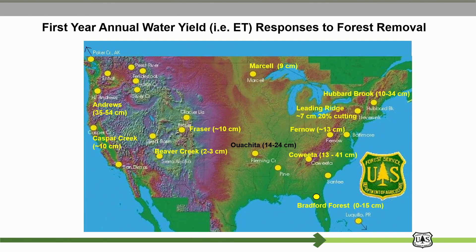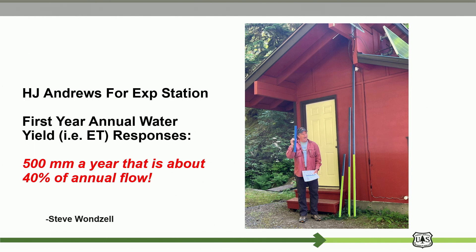We can provide very detailed data on evapotranspiration. For example, at H.J. Andrews — if you clear-cut the forest, how much water can you gain? Basically, you can reduce evapotranspiration by 500 millimeters. That can be even higher than your streamflow in a dry year. The forest uses a lot of water through evapotranspiration. There are three sticks shown — one is dry year, one is really wet year. The blue bar is streamflow and the green one is evapotranspiration. In the dry year, ET is even higher than the runoff.